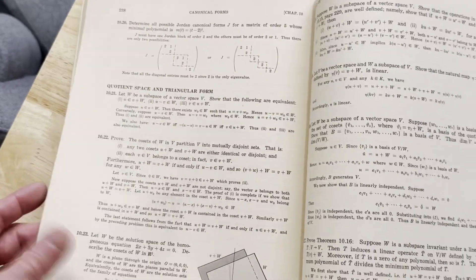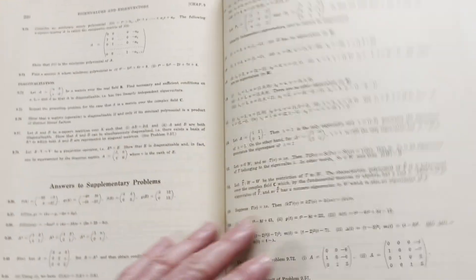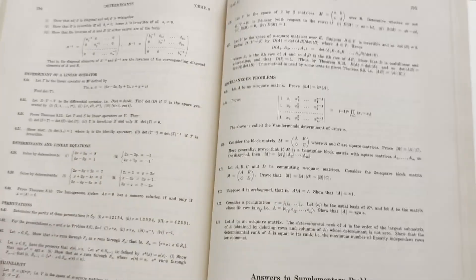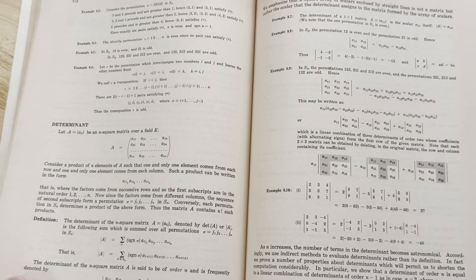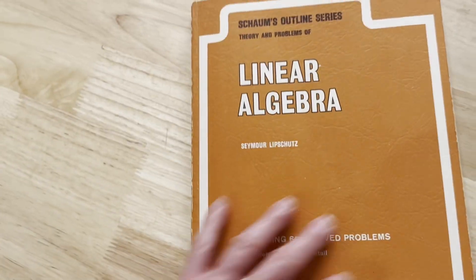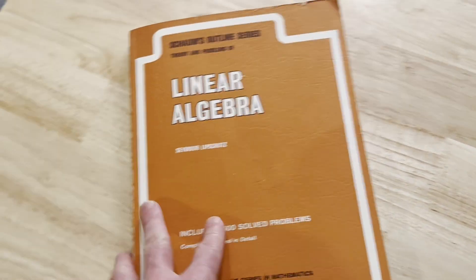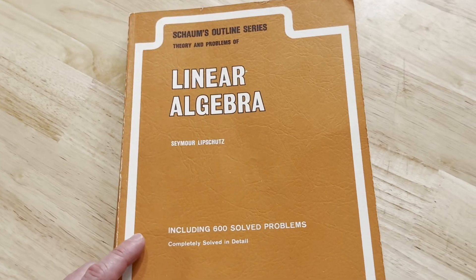Talks about canonical forms, triangular form, quotient space. Yeah. So a lot of this stuff, a lot of it you will see, but a lot of it you won't necessarily see. So yeah, I think if you're looking for a solid linear algebra book, this is a great choice.